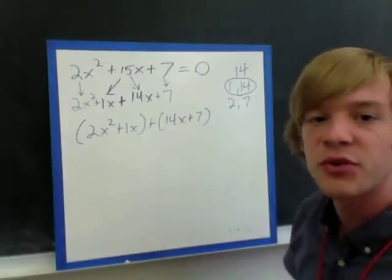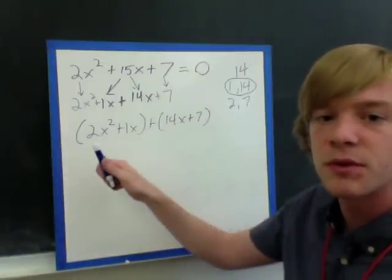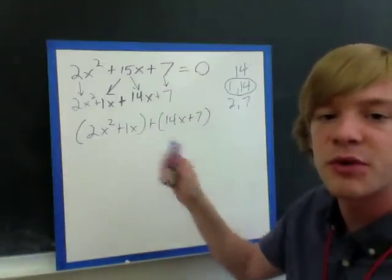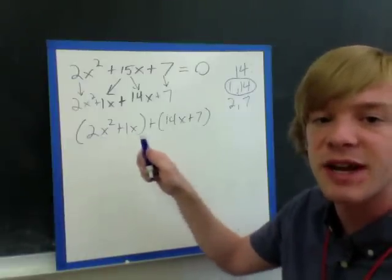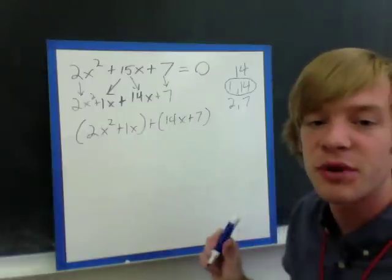And we factor out our greatest common term. So there's no number other than 1 that will divide both 2 and 1, but we should remember that with our first parentheses, we always can factor out an x, because there's an x in both of our terms here.